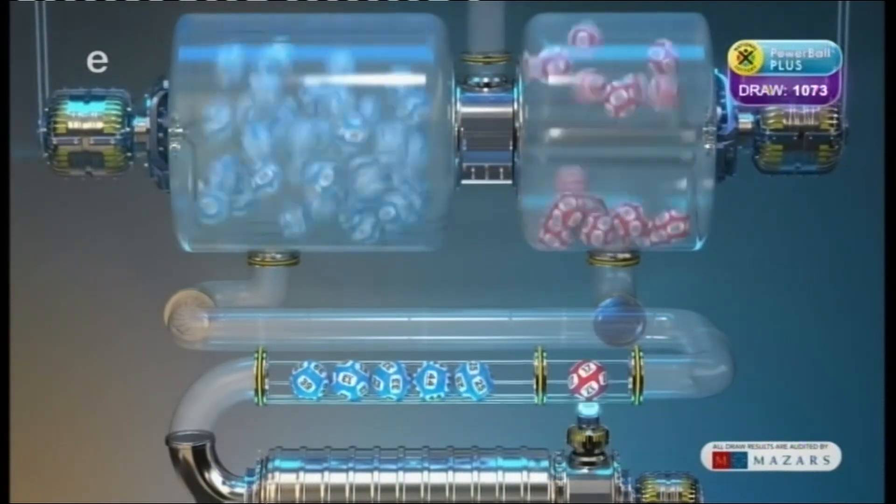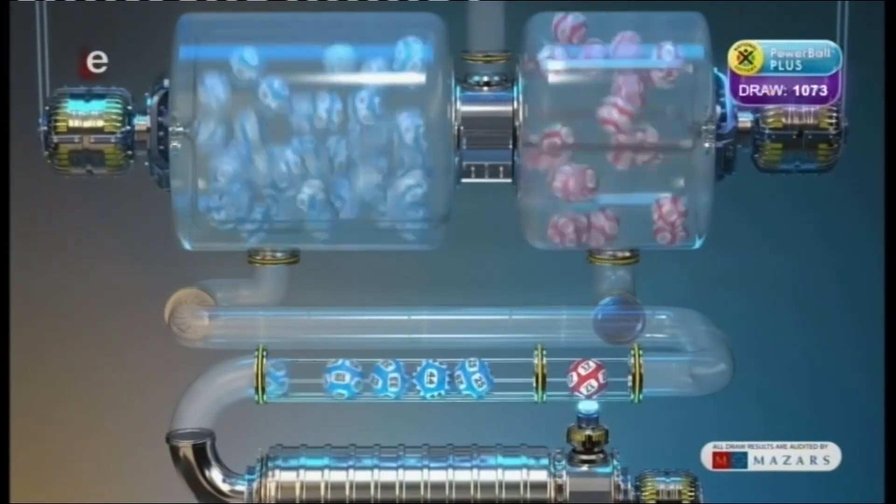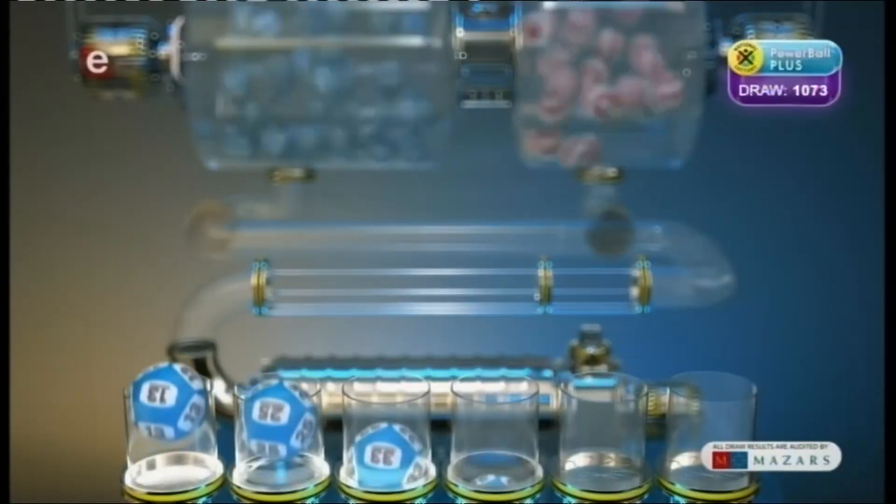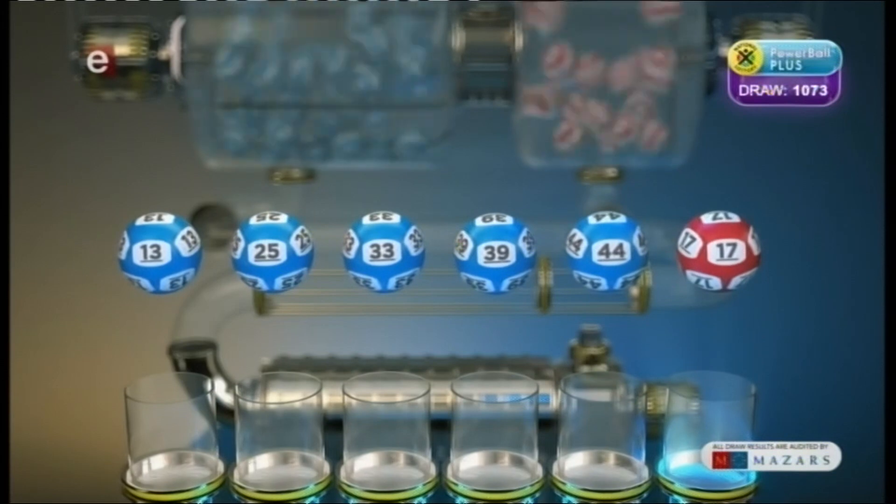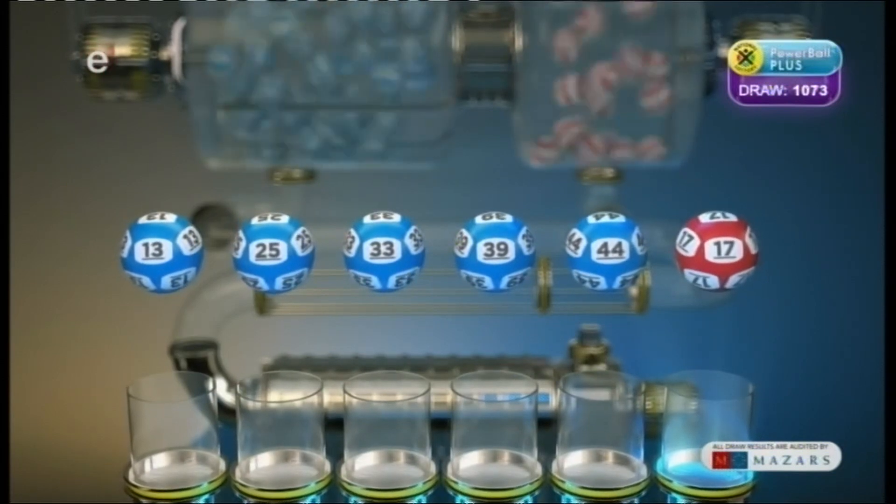And the Powerball is 17. Let's recap these numbers in numerical order: 13, 25, 33,